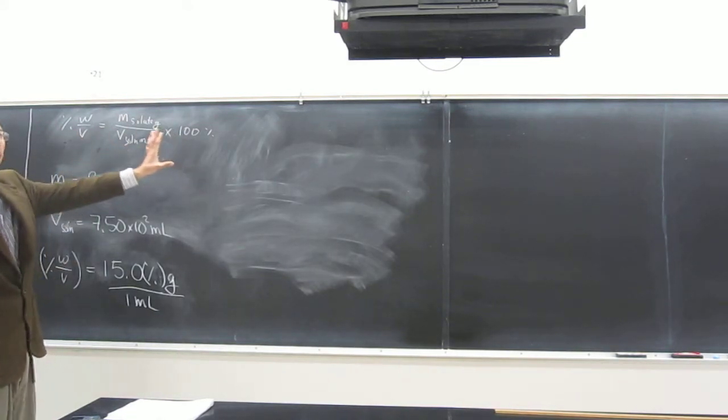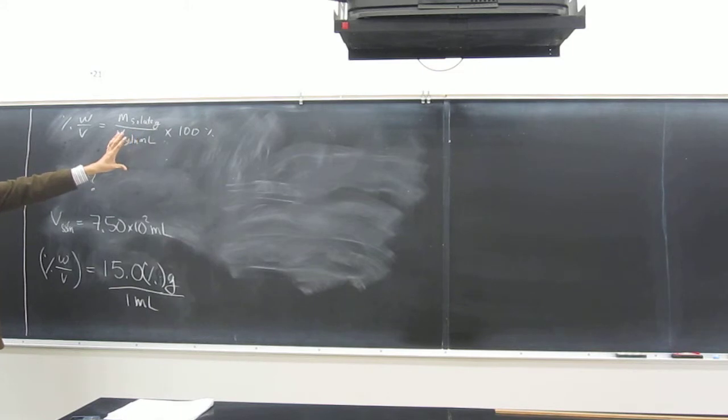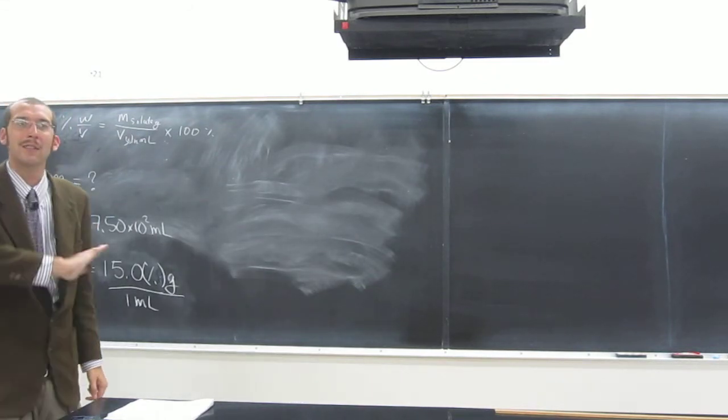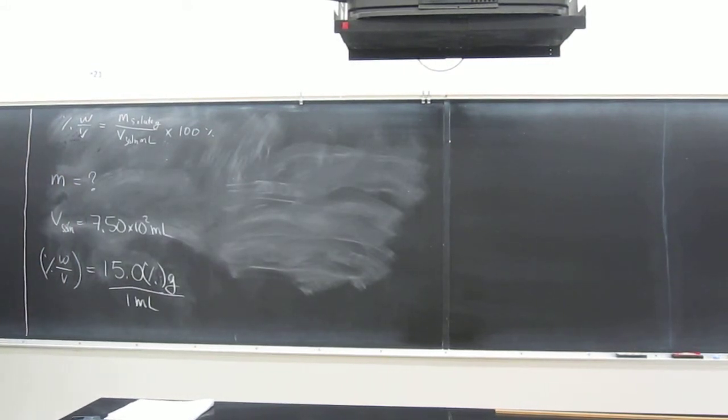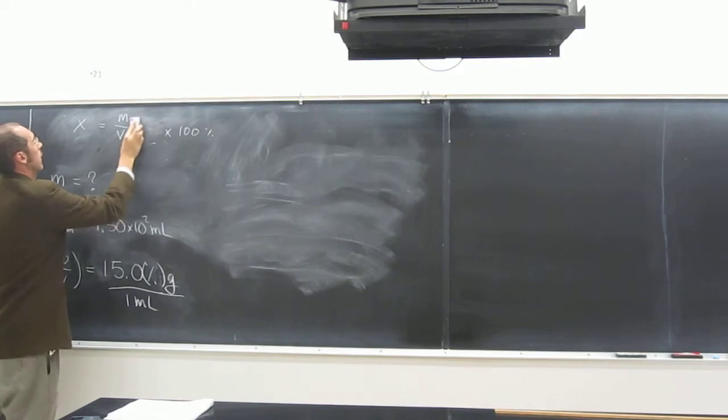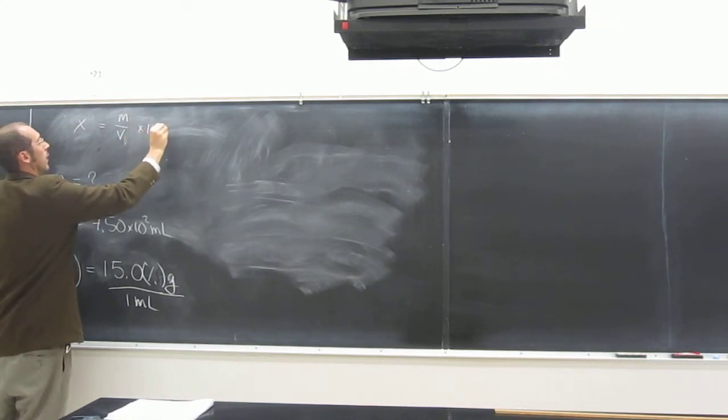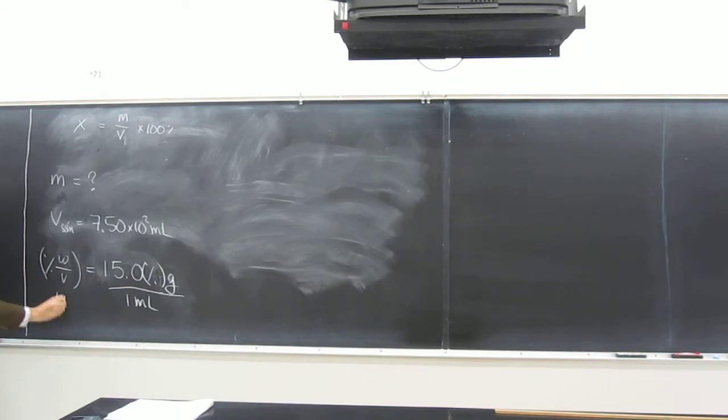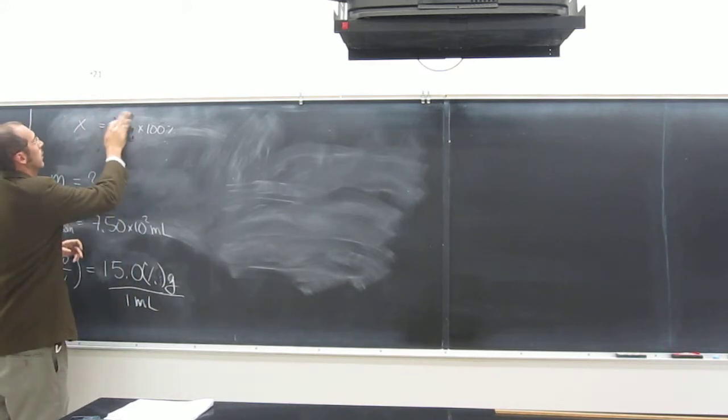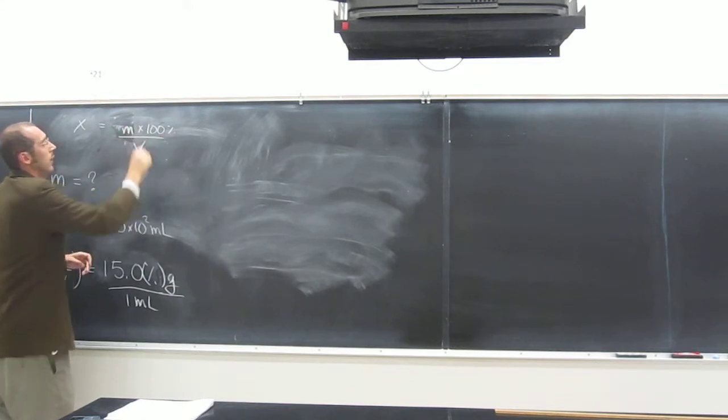So, let's just manipulate this equation in a way that isolates our M variable. So, let's just, for right now, instead of having all this percent, all this V, W, all that stuff, I'm just going to make it X. It'll be easier. So, X equals M over V, times 100 percent. And remember, X equals that. We could also write it like this, because it's the same thing.